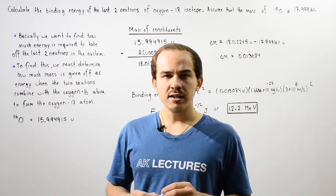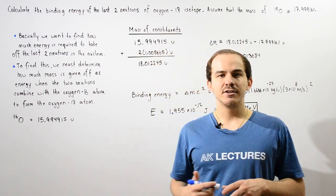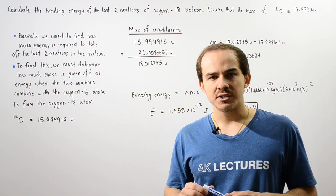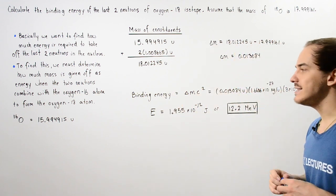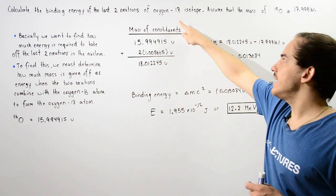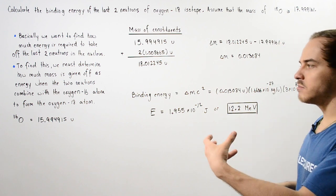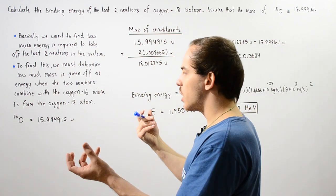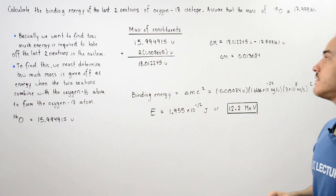Let us suppose we are asked to calculate the binding energy of the last two neutrons in the oxygen-18 isotope. The 18 simply means the sum of the protons and neutrons within the nucleus of our atom.